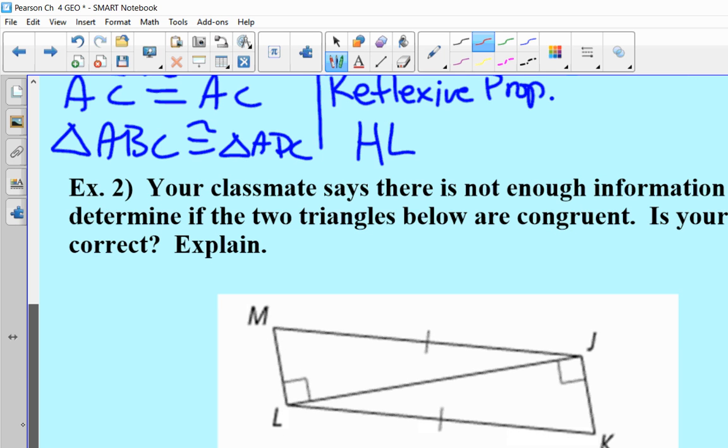Down here is this example number two. If you can go ahead and draw that and label it, please. This is the type of question that we've started a few years back where you're given a situation. This person says they're correct, or vice versa. This person looks like they did it wrong. What did they do wrong? So this student is saying that there's not enough information to determine if the two triangles are congruent.